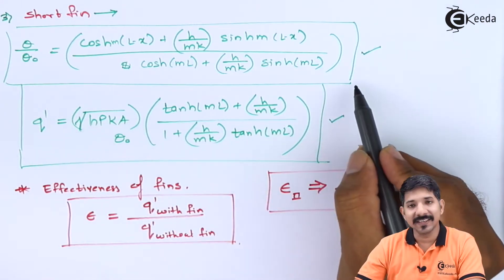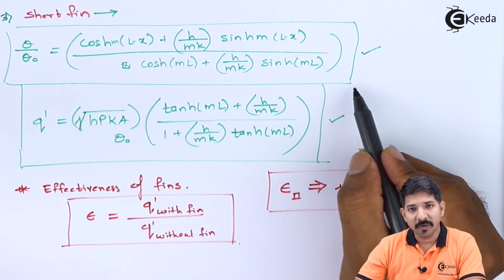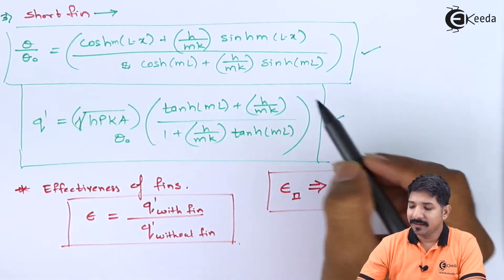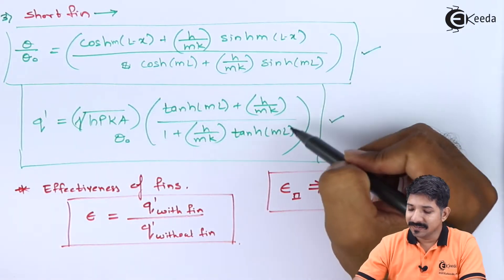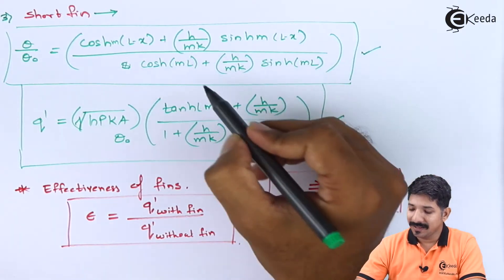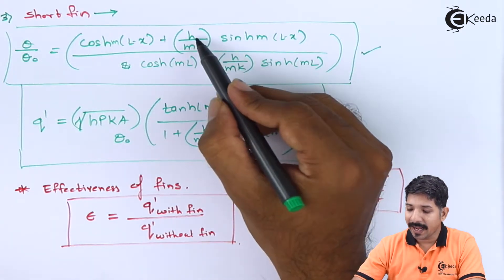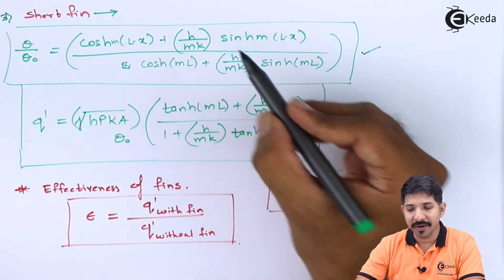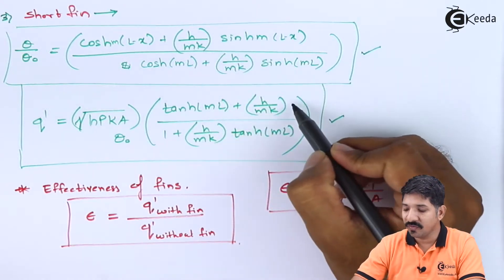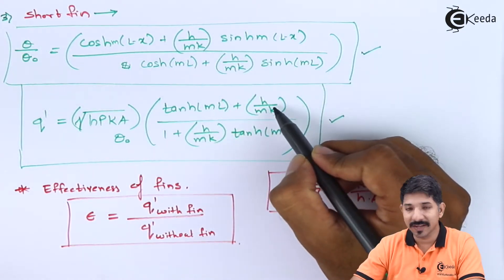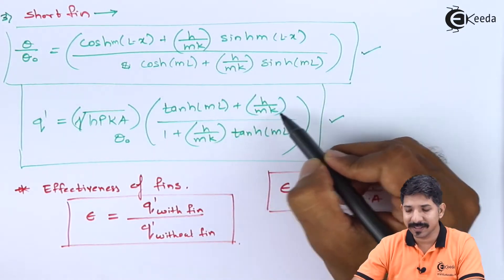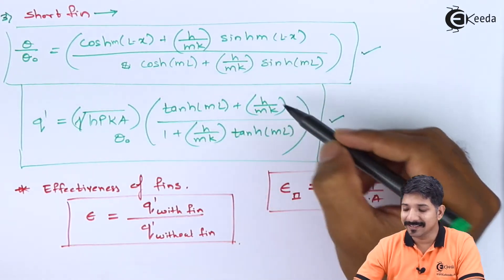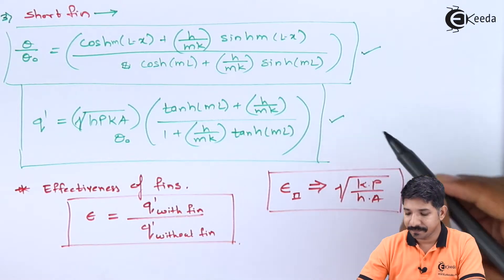These derivations are quite lengthy. In particular, the term H/(mK) is very important — we need to first figure out the value of H/(mK) and then things become easier.